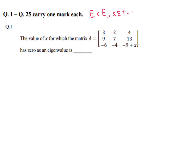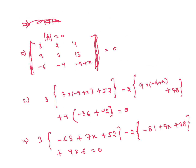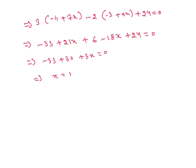The next question: find the value of x for which the given matrix has 0 as an eigenvalue. We know determinant of A equals the product of eigenvalues. If one eigenvalue is 0, the product becomes 0, so determinant of A equals 0. Solving for the determinant equal to 0, we finally get x equal to 1.